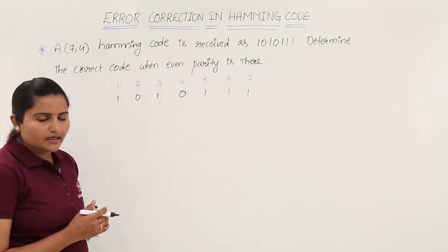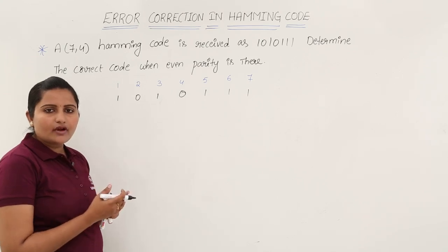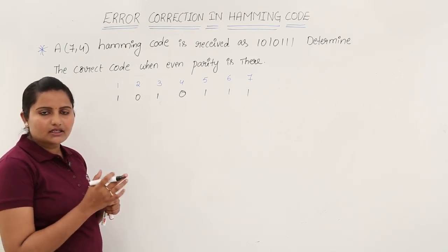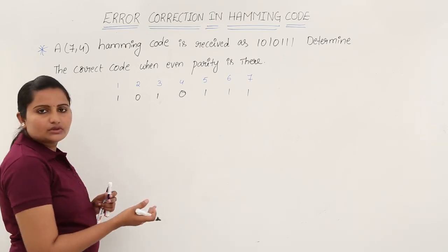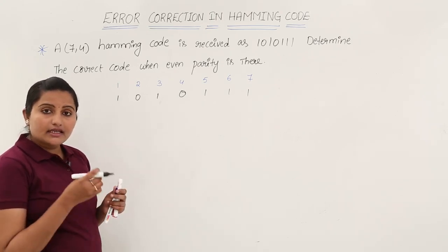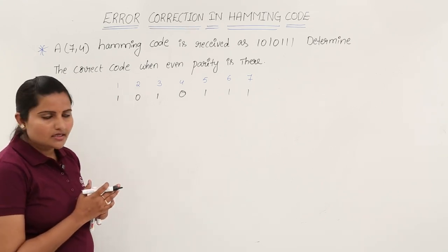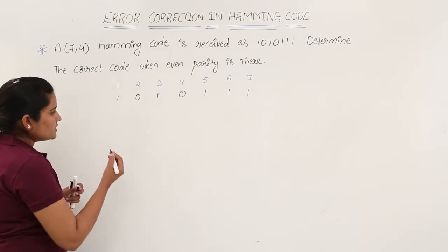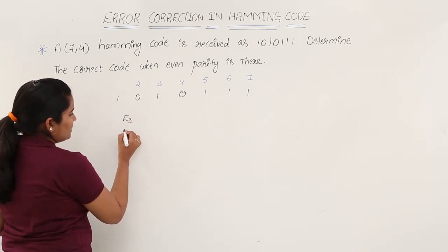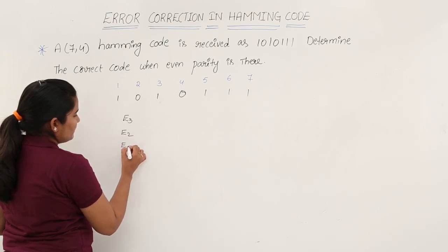As discussed, parity bits can be defined using reference positions: positions 1, 3, 5, 7 for P1; positions 2, 3, 6, 7 for P2; and positions 4, 5, 6, 7 for P3. Error places can also be determined using these same reference positions. You need to compute error places E3, E2, and E1.